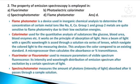The colorimeter is for quantitative analysis of substances like glucose, blood urea, blood enzymes, etc. It works on the principle of absorption of light — a beam of light with a specific wavelength is passed through a solution via a series of lenses, which navigate the colored light to the measuring device. This analyzes the color compared to an existing standard, and a microprocessor then calculates the absorbance or percentage transmittance. A fluorimeter or fluorometer is used to measure the parameters of visible spectrum fluorescence, i.e., its intensity and wavelength distribution of emission spectrum after excitation by a certain spectrum of light. A spectrophotometer measures the amount of photons or intensity of light absorbed after it passes through a sample solution.